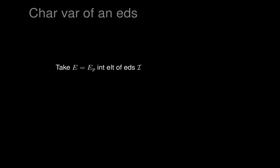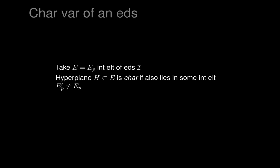Let's start with an integral element E, which is p-dimensional — an integral element of an exterior differential system I. A hyperplane in E is said to be characteristic if it also lies in some other integral element E p-prime, not equal to E p, so also p-dimensional but not the same one. The characteristic variety here is the set of characteristic hyperplanes, and I leave you to check that that corresponds to the notion for PDEs.